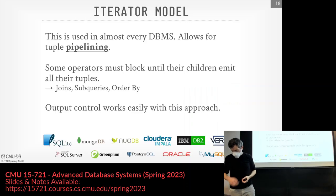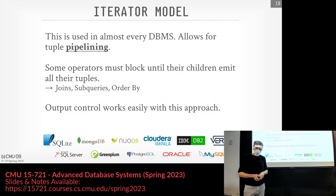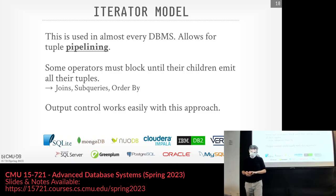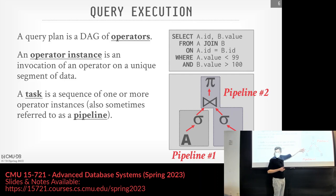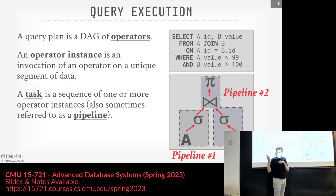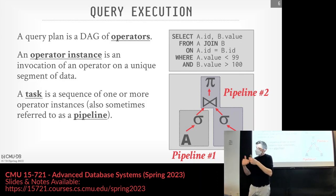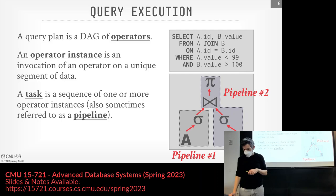When I say pipelining, I just mean there's a sequence of operators — it doesn't mean all the stages are going in parallel. That would be intra-query parallelism, which comes later. This is just about how you're moving data from one operator to the next. We'll get to how you actually implement it when you want to have multiple threads. There's also a language issue — when I say pipeline, the OS person might mean something different. When I say latch, the OS person will say lock.